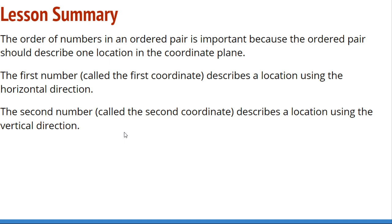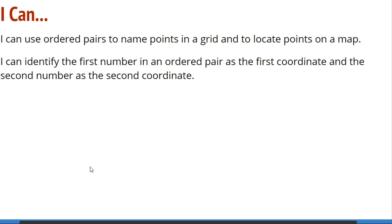Lesson summary: The order of numbers in an ordered pair is important because it should describe one specific location in the coordinate plane — not like the football stadium example where you could end up in the wrong section or seat. The first number, called the first coordinate or x-coordinate, describes a location using the horizontal direction. The second number, the second coordinate, describes the vertical direction. That concludes Module 3, Lesson 14. Make sure you complete your problem set and exit ticket, and reach out to your teacher with any questions.